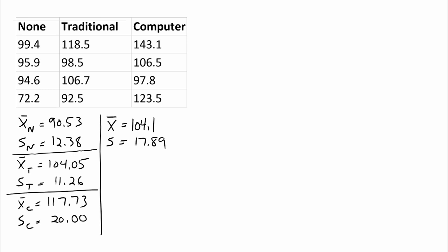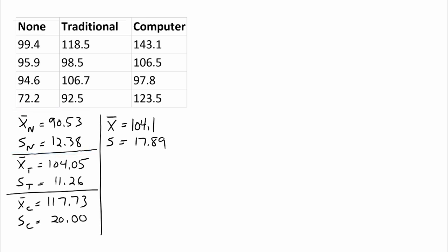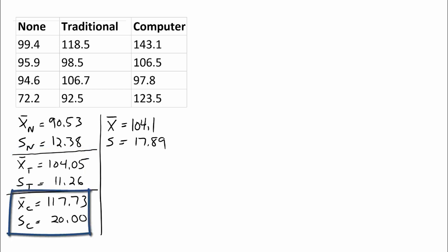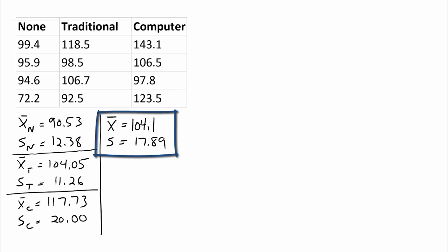Computing one-way ANOVA by hand is really quite easy if you already have some summary statistics. You can see below the table that I've already computed the mean and standard deviation for each group. The sample mean for no tutoring was 90.53, with a standard deviation of 12.38. The traditional tutoring group had a mean of 104.05 and a standard deviation of 11.26. The computer-based tutoring group had a mean of 117.73 and a standard deviation of 20. I've also computed the grand mean of 104.1 and the overall standard deviation of 17.89.